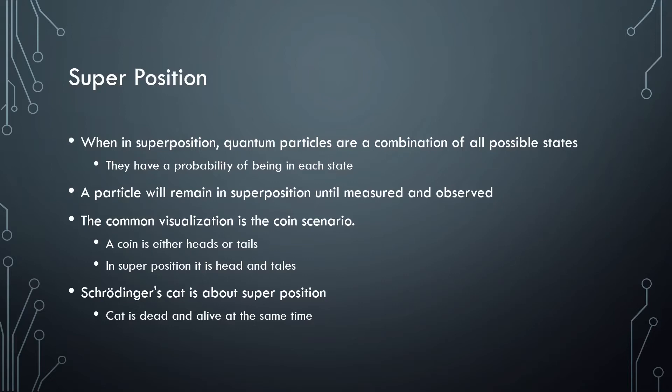A common visualization of this is the coin scenario. A coin is either heads or tails normally, but when in superposition, it is both heads and tails at the same time. Schrodinger's cat is also about superposition, but it presents it as more of a paradox.